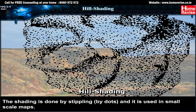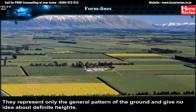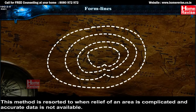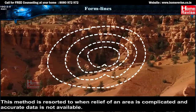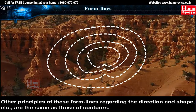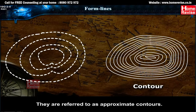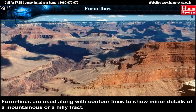Form lines are broken contour lines joining places with the same height above sea level. They represent only the general pattern of the ground and give no idea about definite heights. This method is used when the relief of an area is complicated and accurate data is not available. The other principles regarding direction and shape are the same as those of contours, so they are referred to as approximate contours. Form lines are used along with contour lines to show minor details of a mountainous or hilly tract.